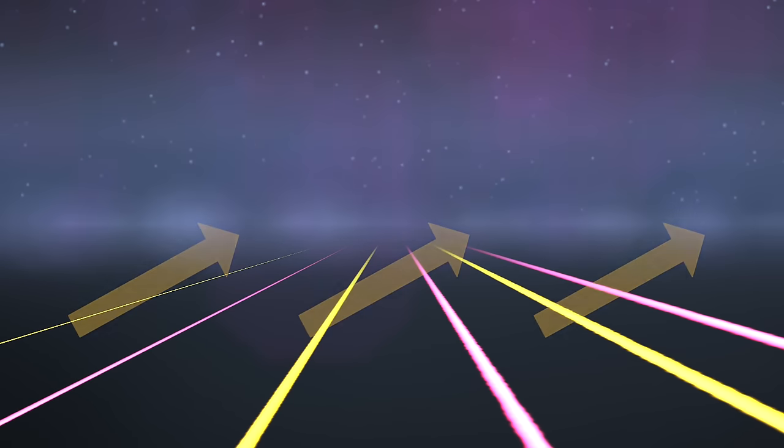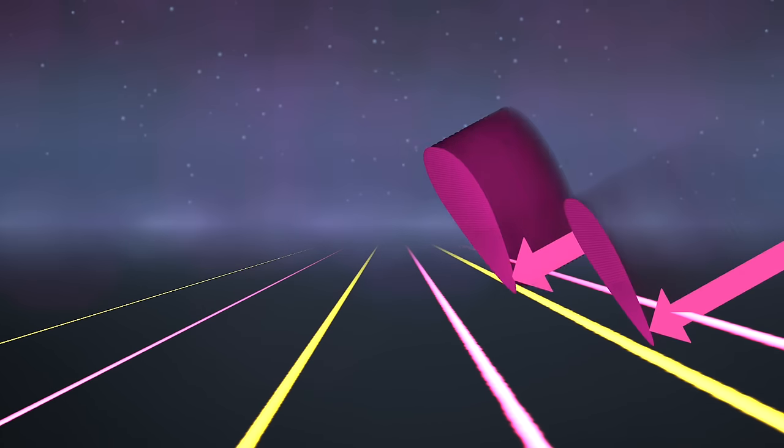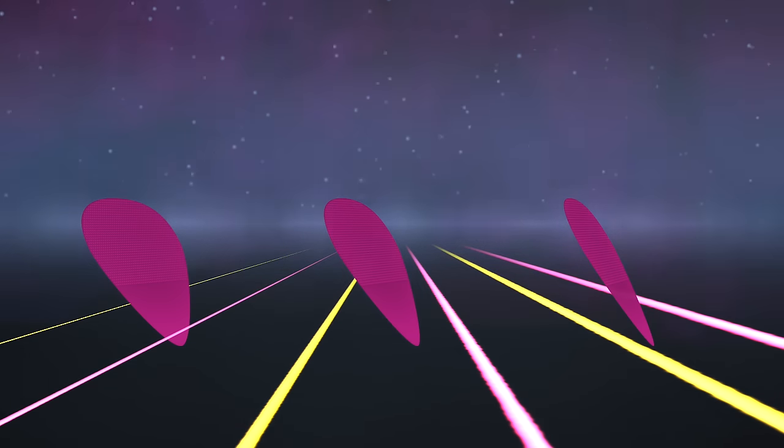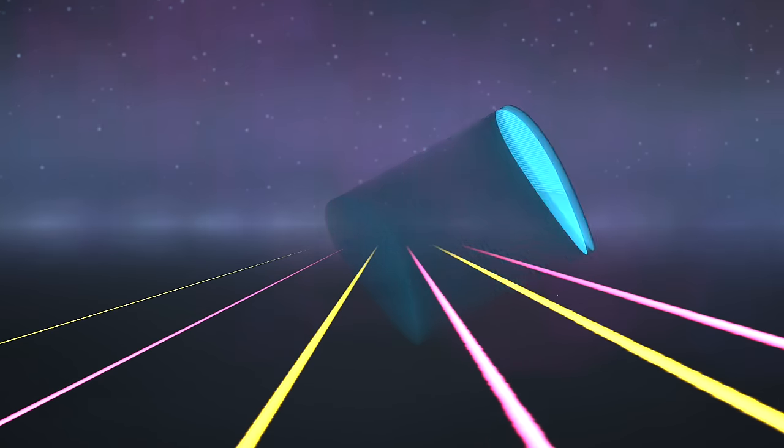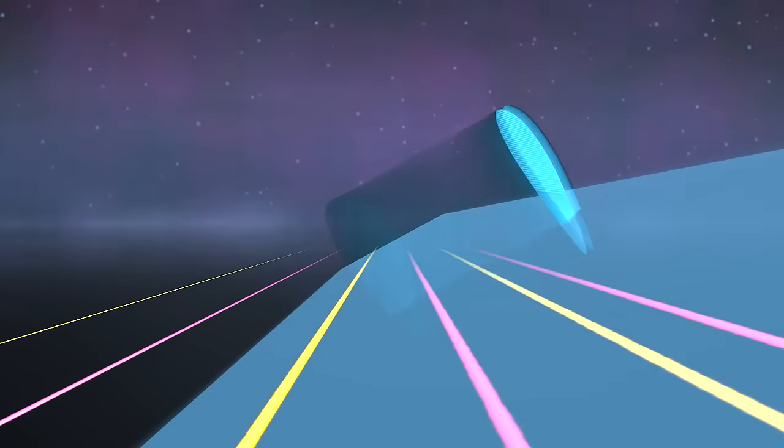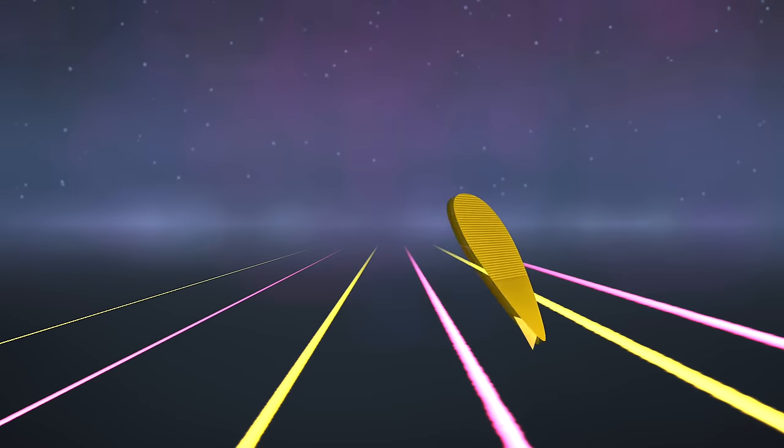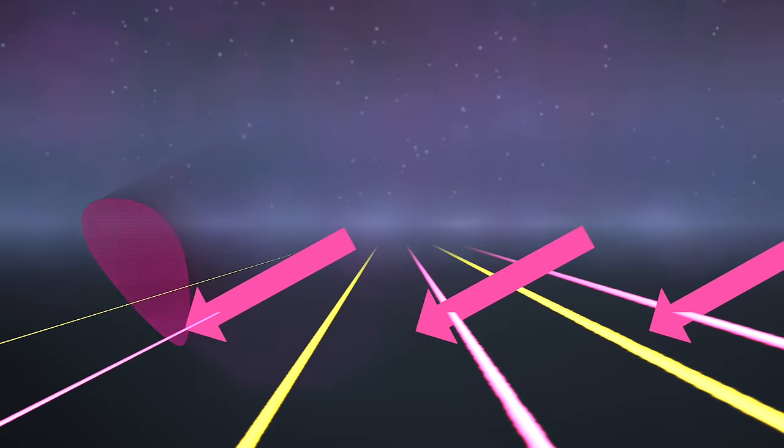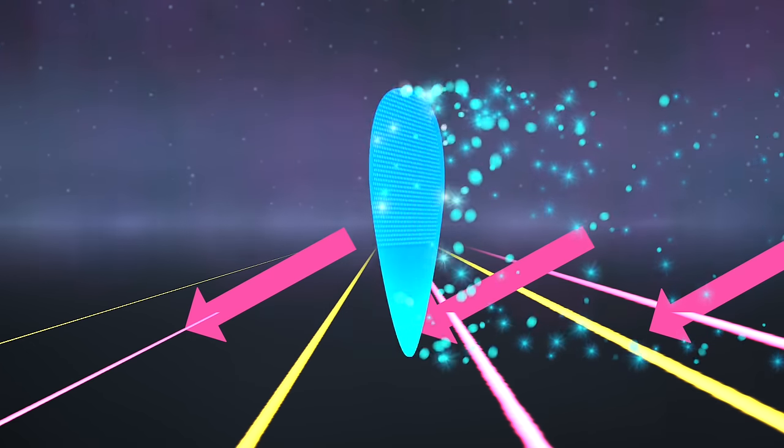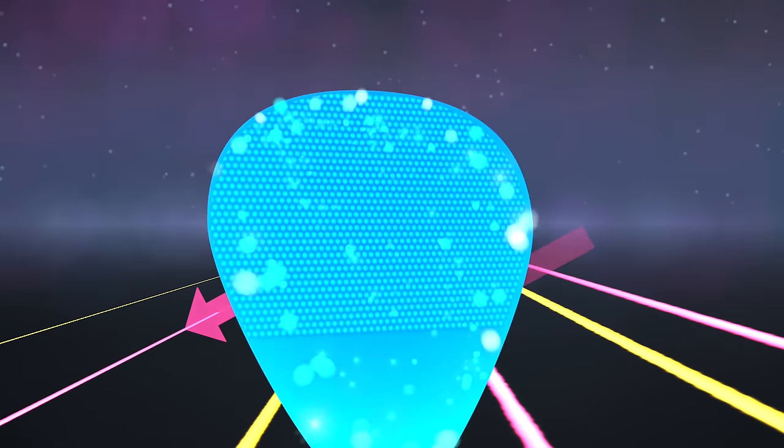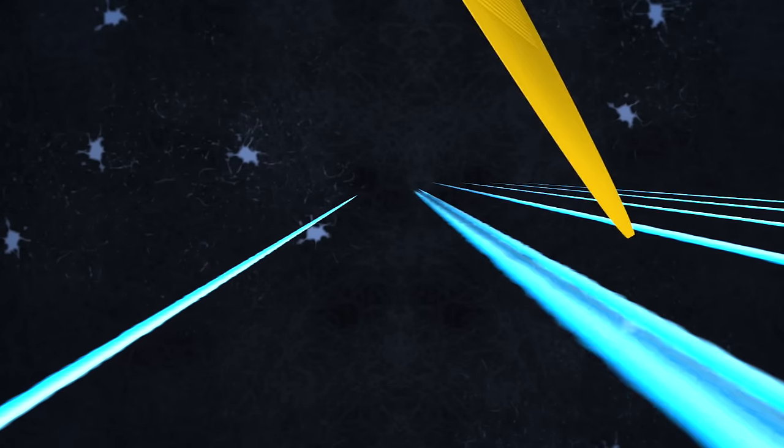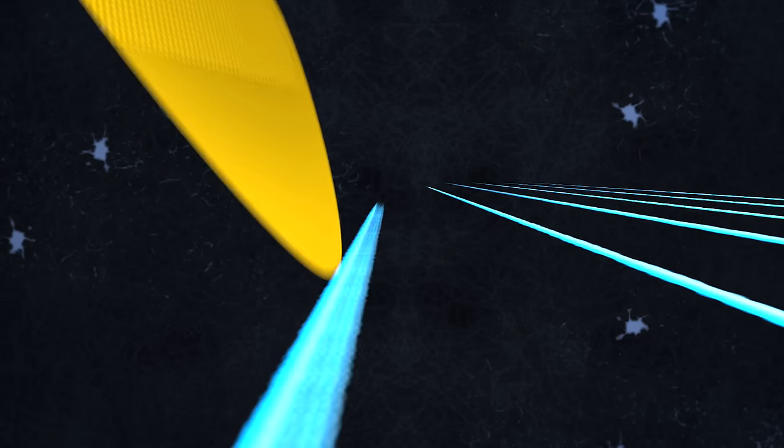But what about the other string changes? Those are all downstrokes. In fact, in the traditional downward pick slanting scenario, we would have no way of getting over those strings at all. The picking motion is happening along this plane here. So the upstrokes are all up here, and the downstrokes are all down here, where they're stuck. The best we can usually do is simply avoid these downstrokes altogether and design licks that only ever switch strings using upstrokes. This is exactly what Yngwie and Eric Johnson do, and this is the classic downward pick slanting way.